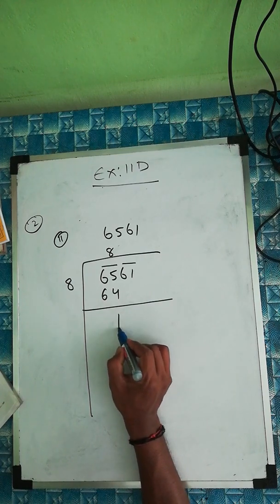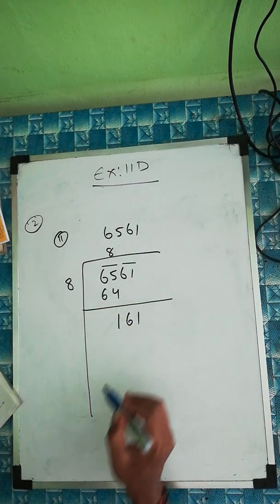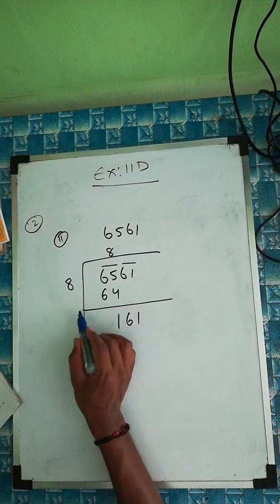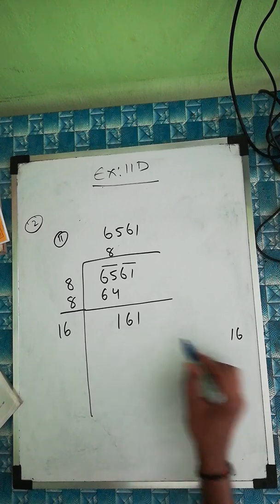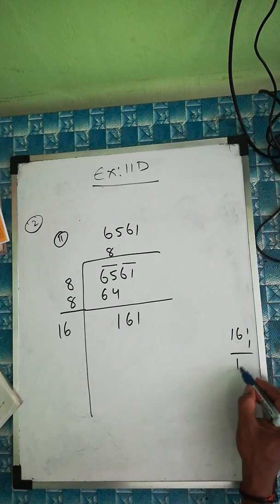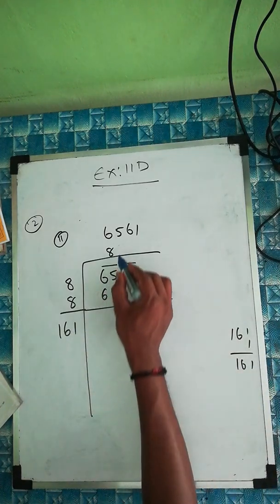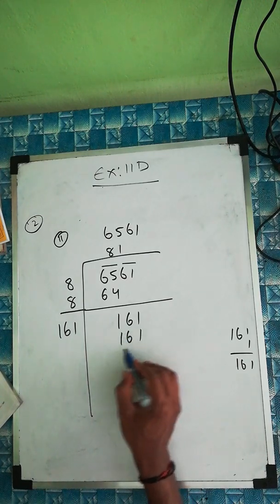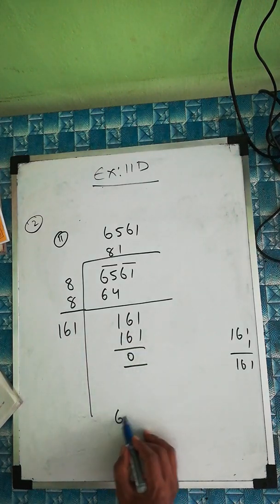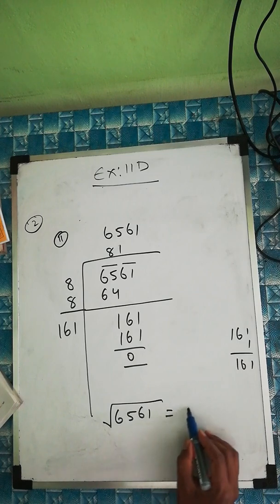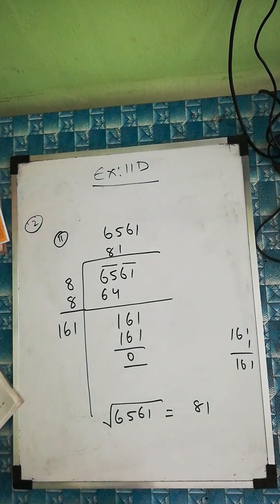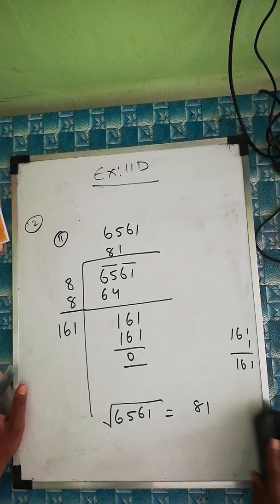We now need a digit such that 16-something multiplied by that digit gives 161. Try 1: 161×1=161. Yes, that works! So we put 1 in the quotient. Therefore, the square root of 6561 is 81.